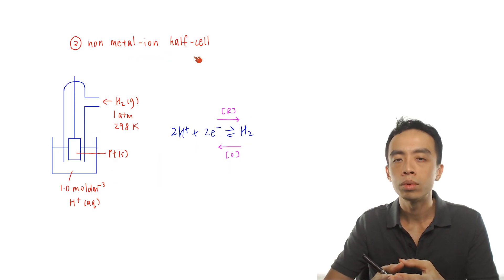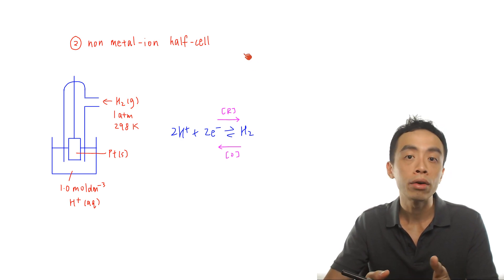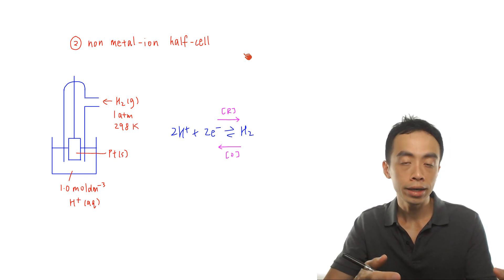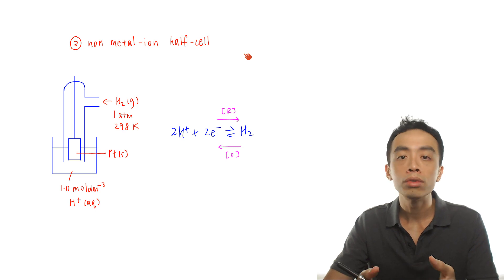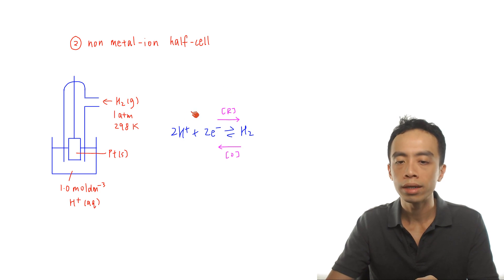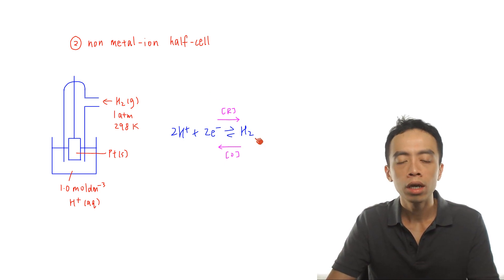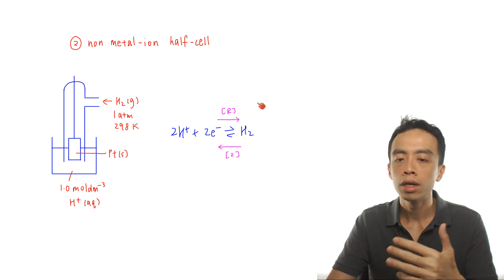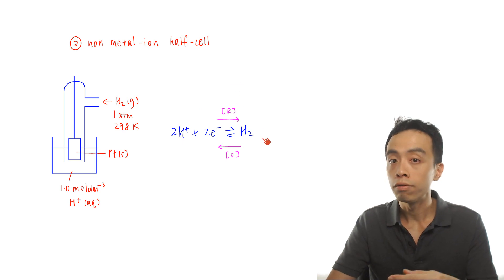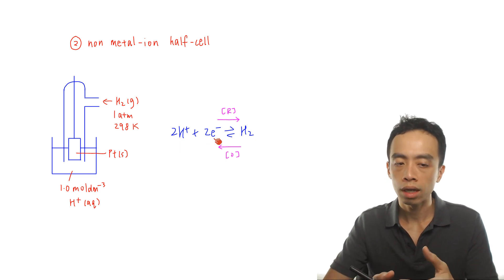The second type of half cell is the non-metal ion half cell, which some schools call the gas-ion half cell. It is established between a gas and an ion in the aqueous state. Using H⁺(aq) and H₂(g) as an example — this is also the standard hydrogen electrode — we write the half equation in reduction form: 2H⁺ + 2e⁻ → H₂. In the forward direction, 2H⁺ gains two electrons and is reduced to H₂. In the reverse direction, H₂ is oxidized to form 2H⁺ + 2e⁻.